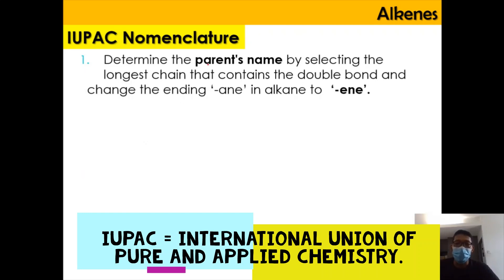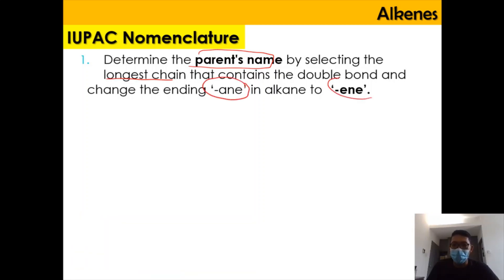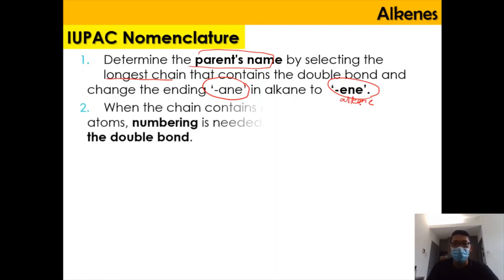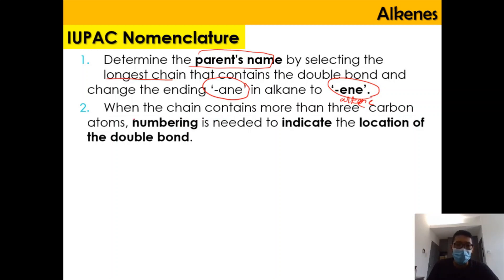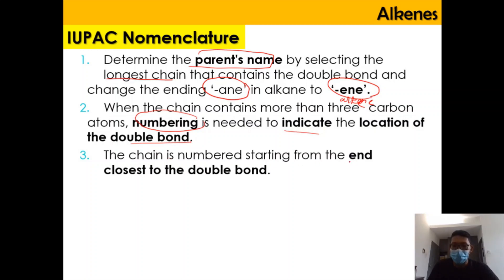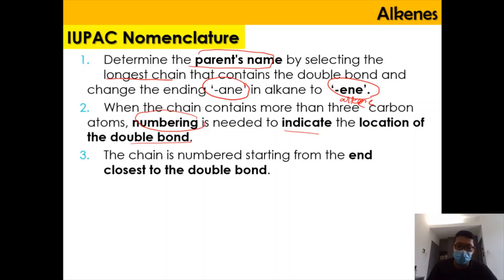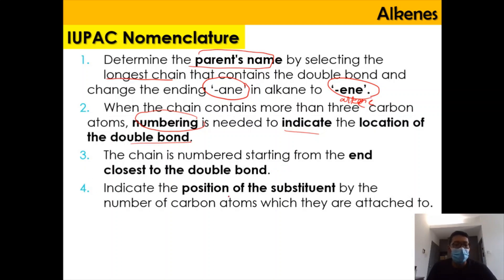For IUPAC nomenclature, first determine the parent name by selecting the longest chain and change '-ane' to '-ene'. When the chain contains more than 3 carbon atoms, numbering is needed to indicate the location of the double bond. The chain is numbered starting from the end closest to the double bond. The position of substituents is indicated by the number of the carbon atom they are attached to.